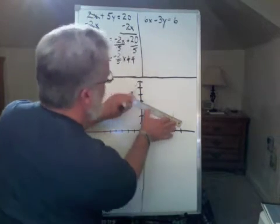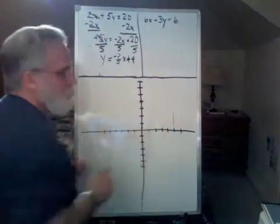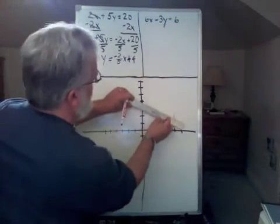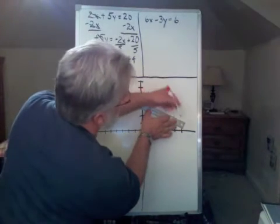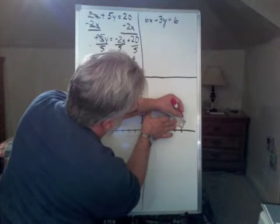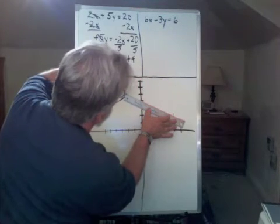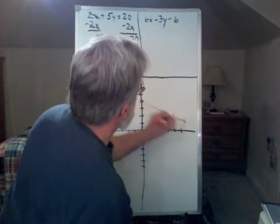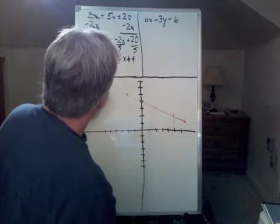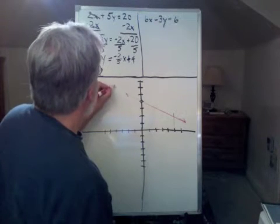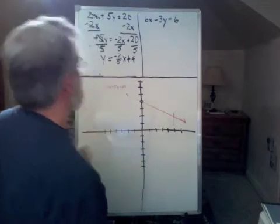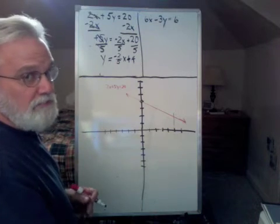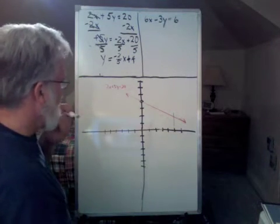Now I'm going to draw my line between those two points. And there's my first line. This line represents 2x plus 5y equals 20. Now, if we wanted to pick points along this line and plug them in, we'd find out that it's the correct answer. So, that's one line.